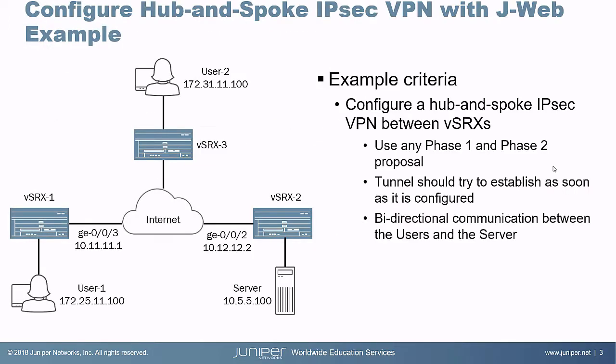Here is our example. We have three VSRXs: VSRX1, VSRX2, and VSRX3, and we have two sets of users. User 1 is connected to VSRX1, User 2 is connected to VSRX3, and a server is connected to VSRX2. We need to provide secure, bi-directional communication between all of the users and the server. A hub-and-spoke VPN works perfectly here — we set VSRX3 as the hub, and VSRX1 and VSRX2 are the spoke devices.